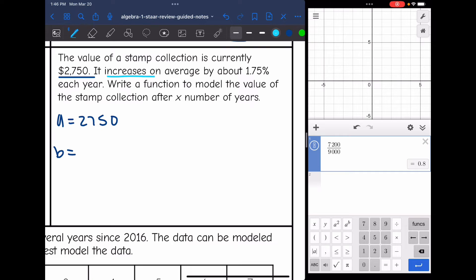It says it increases on average by about 1.75%. So since it is growing, I'm going to do one plus the rate as a decimal for my b value to get that b value to be greater than one. Since I know that it's increasing. So my b value would be 1 + 0.0175. So my b value is 1.0175. So now I have both things I need to write my equation, I have the a and the b value. So it would be y = 2750(1.0175)^x.